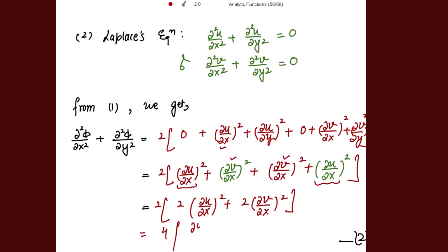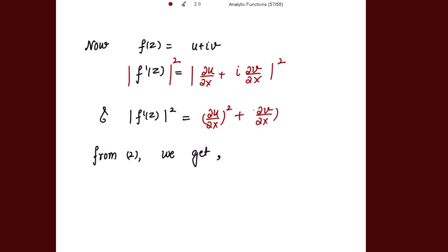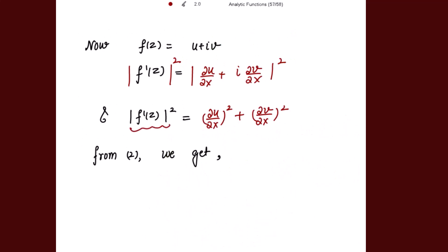Please mark this result as equation (2). Now, since f(z) = u + iv is analytic, f'(z) = ∂u/∂x + i·∂v/∂x. Taking the modulus squared: |f'(z)|² = (∂u/∂x)² + (∂v/∂x)². So from equation (2), ∂²φ/∂x² + ∂²φ/∂y² = 4|f'(z)|².